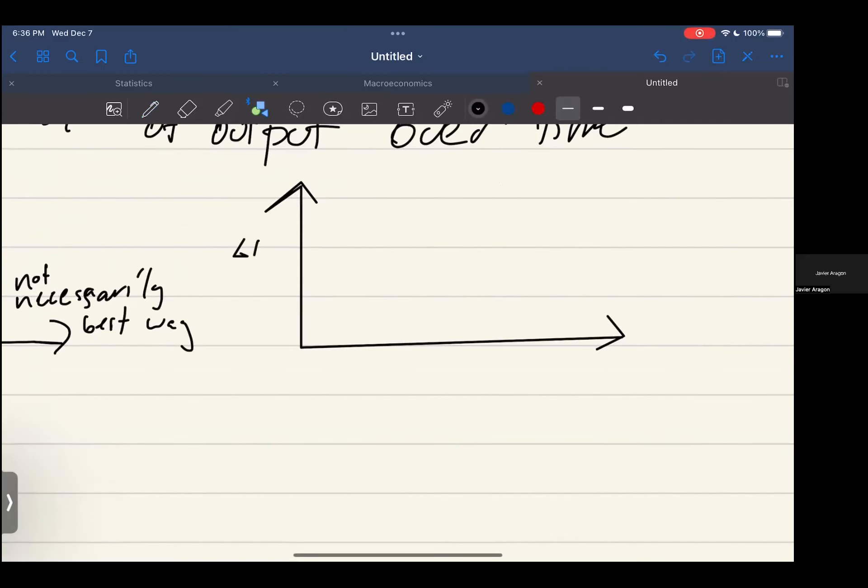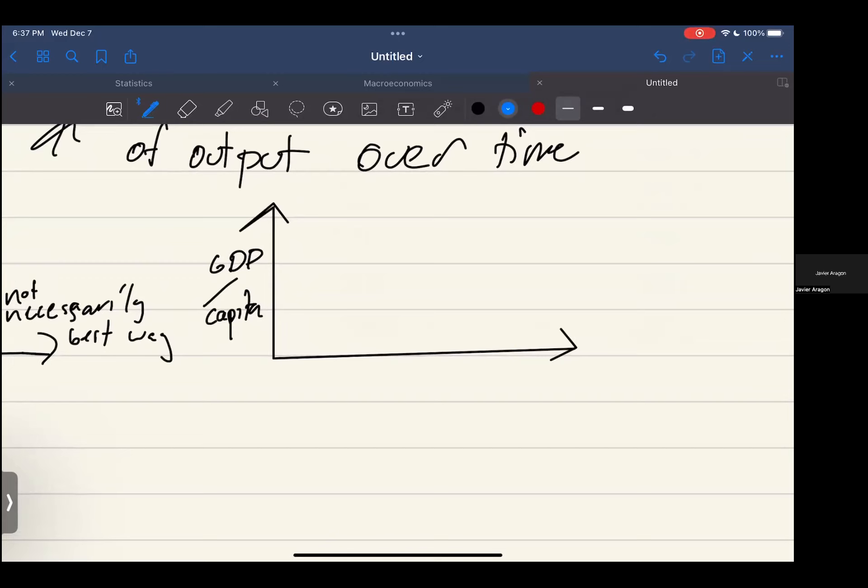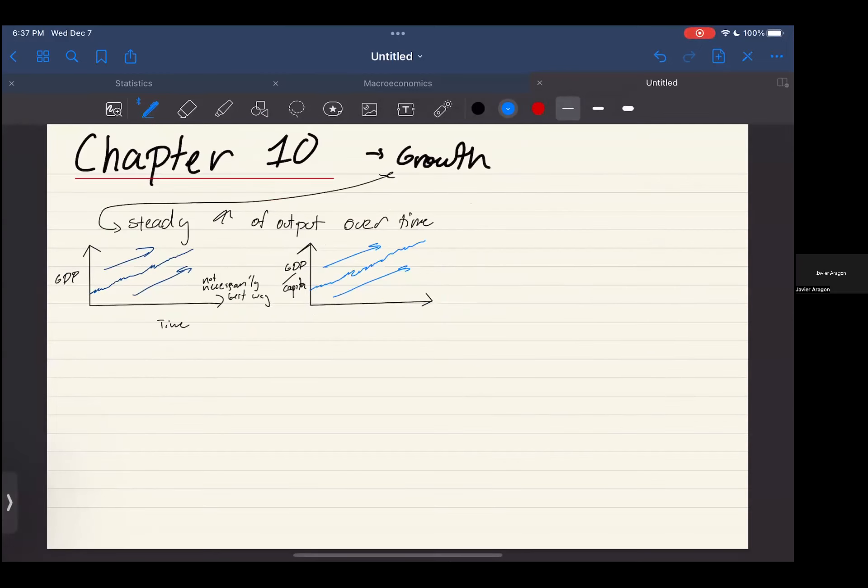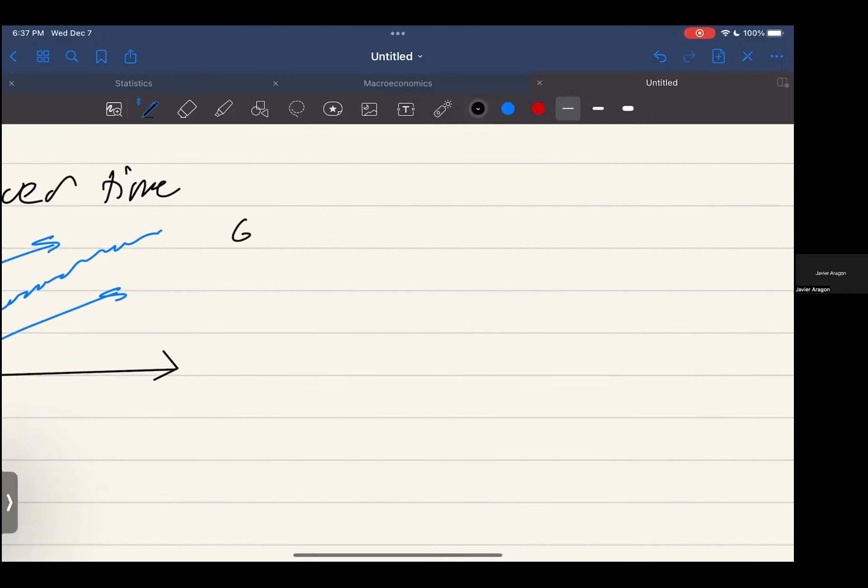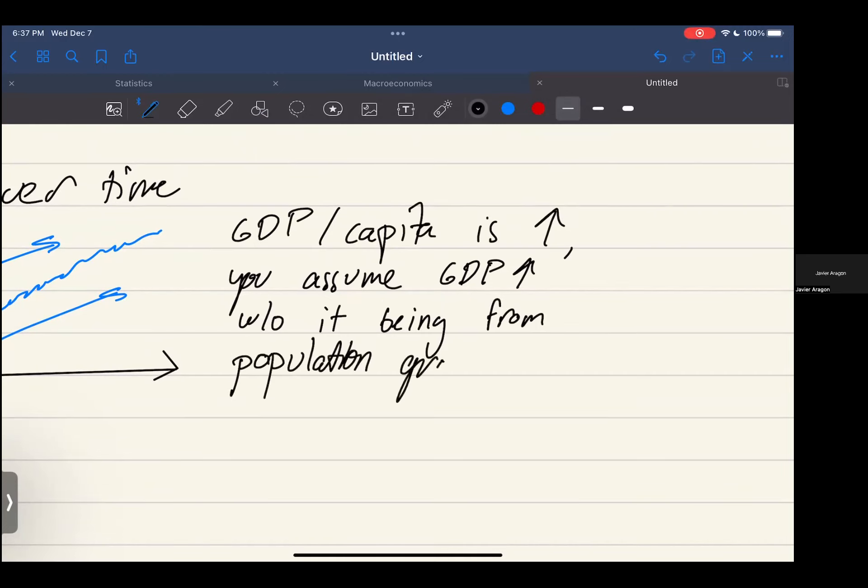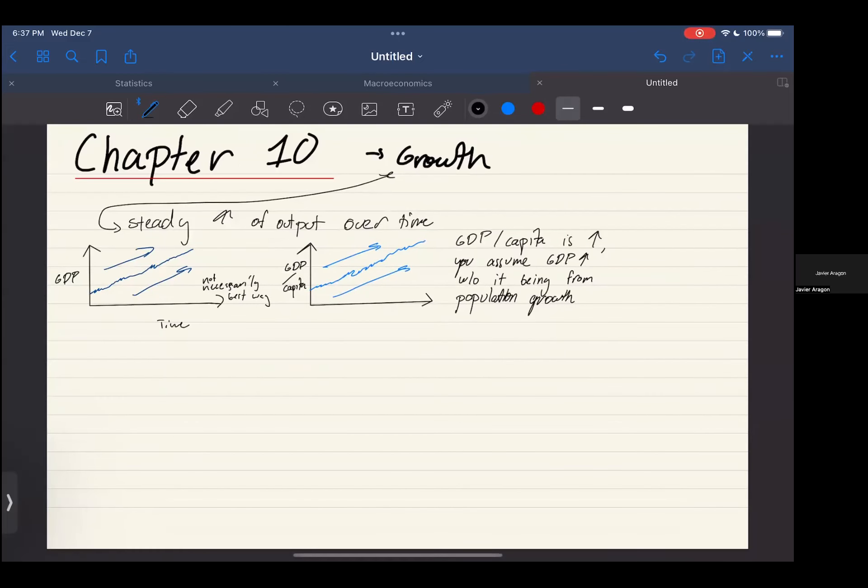The best way usually is measuring it by the growth of GDP per capita. This GDP per capita will follow a similar trend, but if your GDP per capita is growing, you can assume GDP is also increasing without it being from population growth.